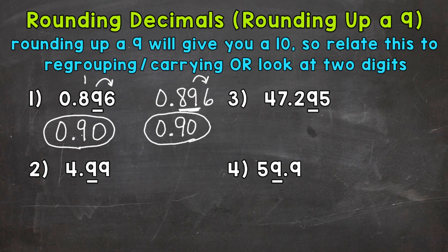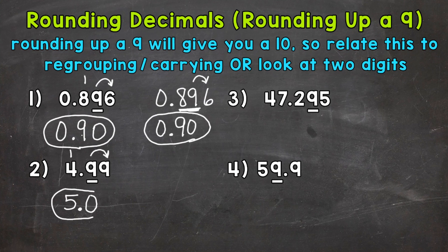Let's try a few more examples and move on to number 2, where we have 4 and 99 hundredths. We're going to round to the nearest tenth. We have the digit in the tenths place underlined — it's that 9. Look to the right and we have a 9, so we are going to round up. If we round up a 9, we get 10. So put the 0 in the tenths and regroup or carry the 1. Now we have that 1 and the 4, which gives us 5. Bring our decimal down, and 4 and 99 hundredths rounded to the nearest tenth is 5.